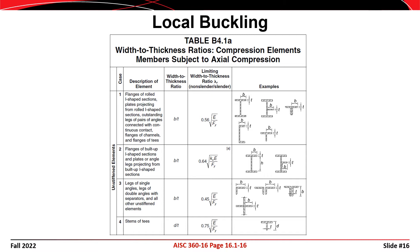Table B4.1 is broken into two major sections. The first covers unstiffened elements such as flanges, legs of angles, and stems of T's. The primary value we'll use most often is lambda sub r equal to 0.56 times the square root of E over F sub y, though other values are used depending on the particulars of the problem.